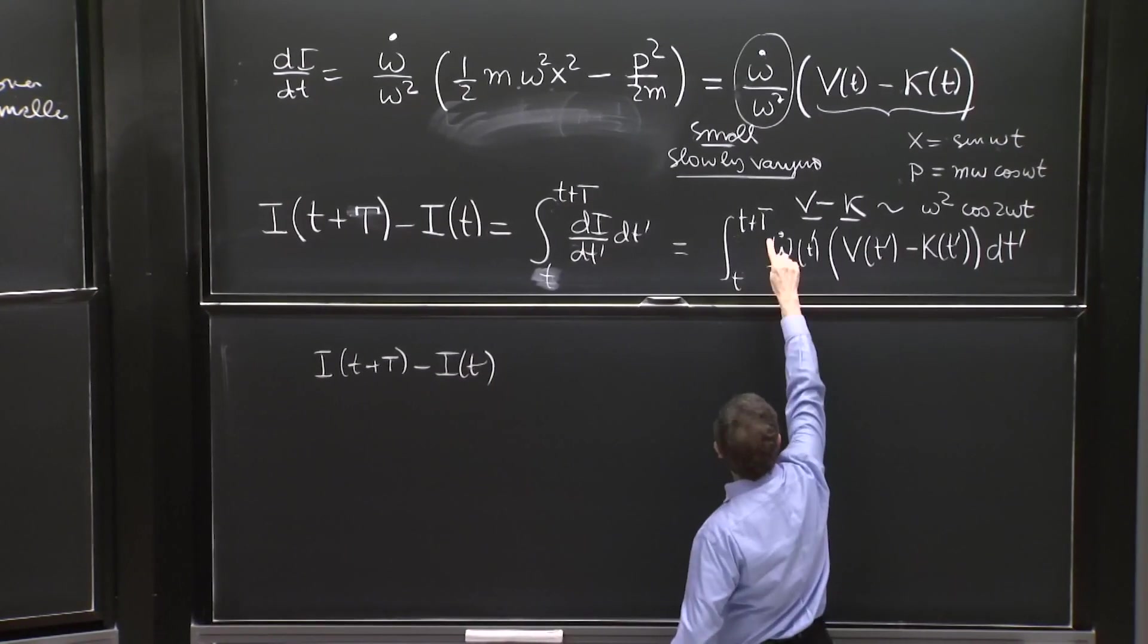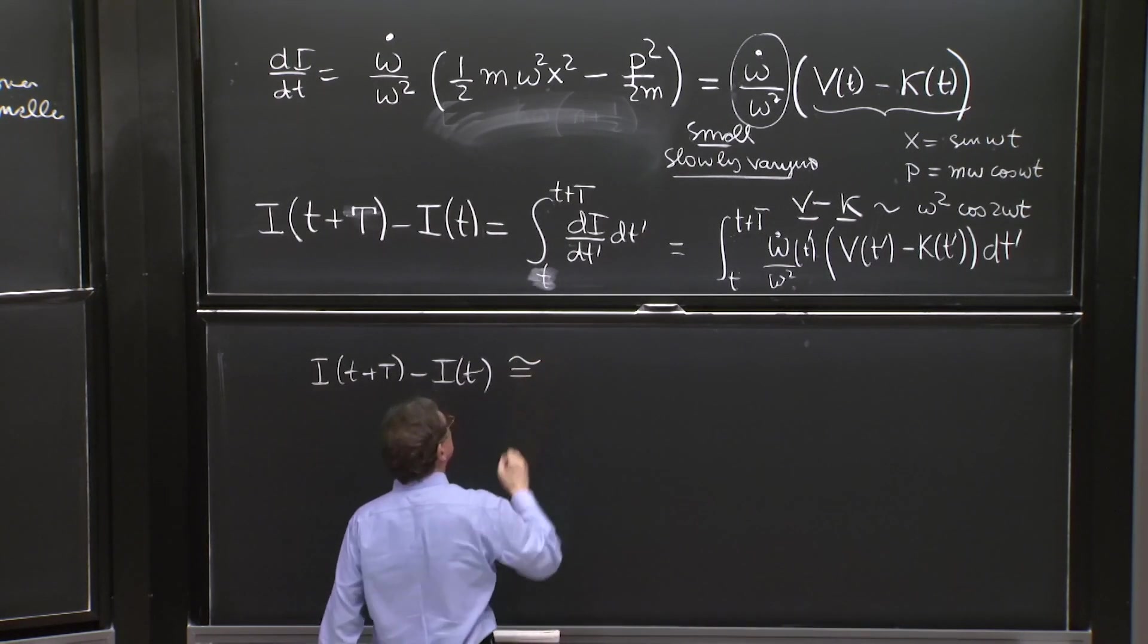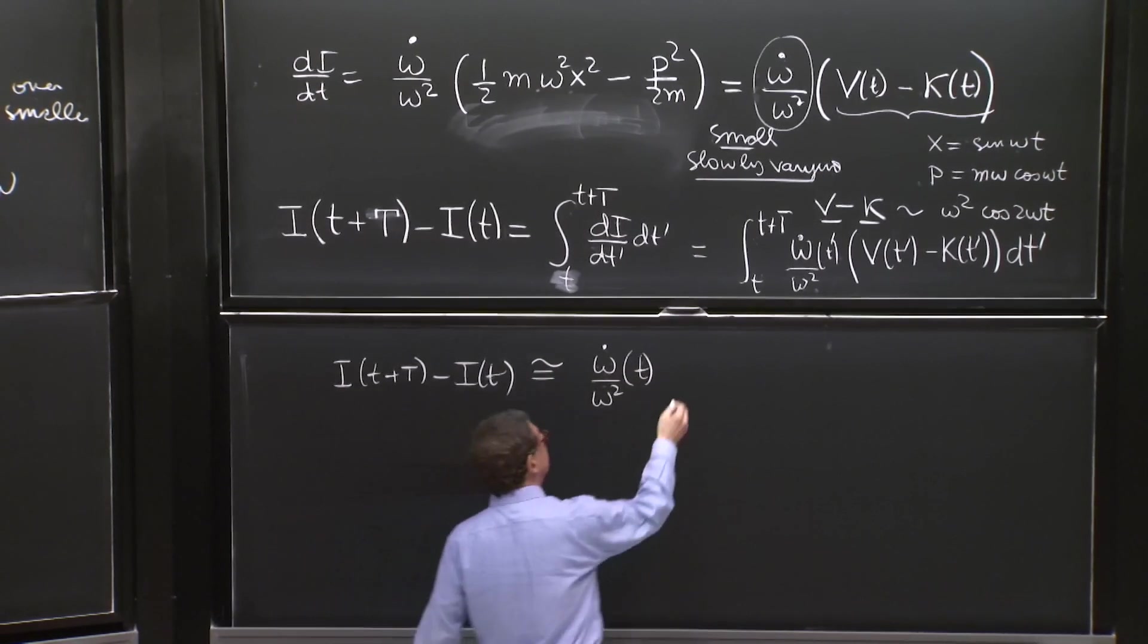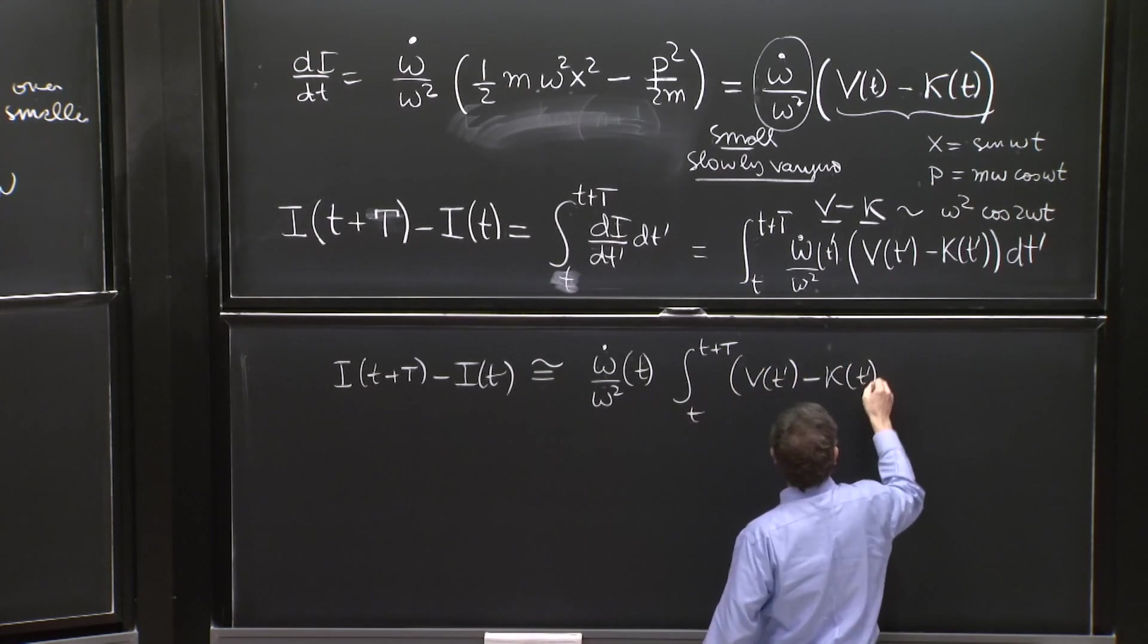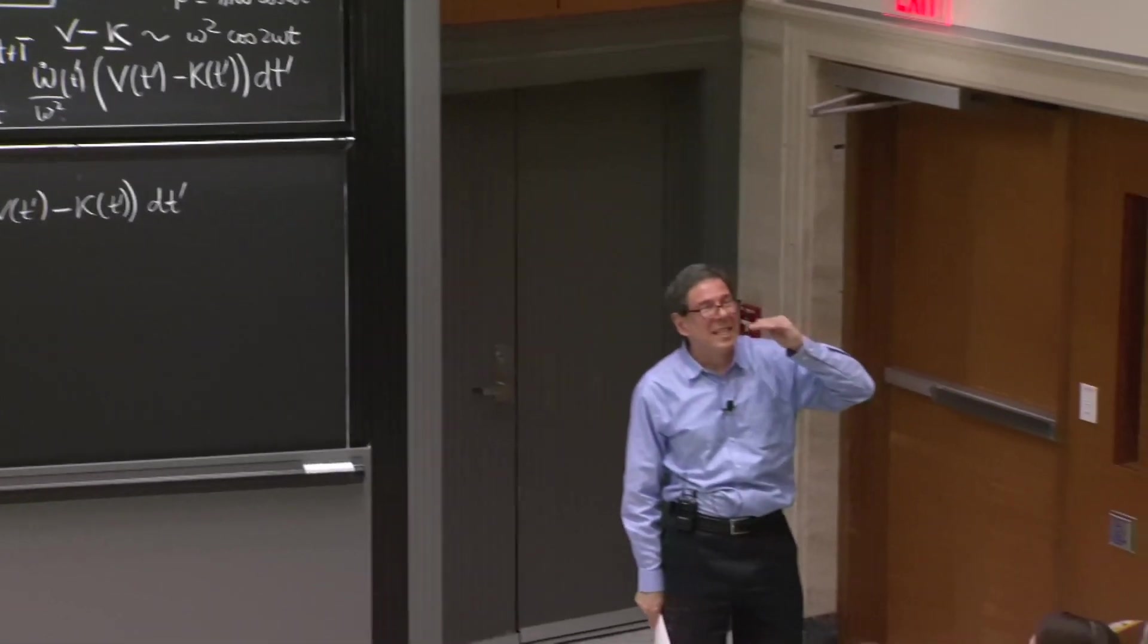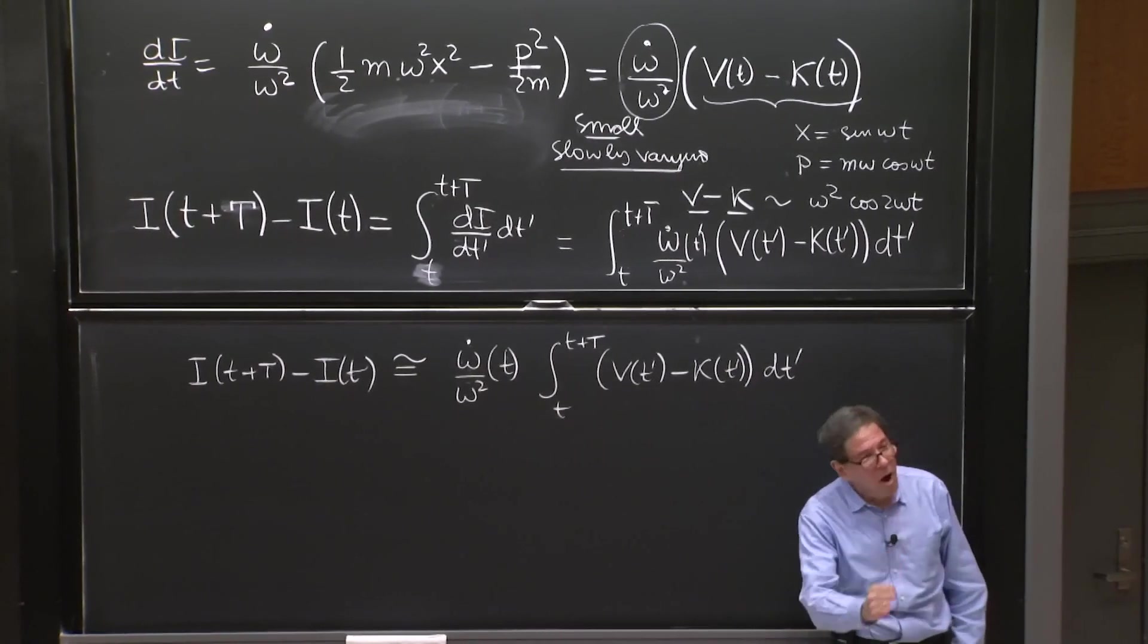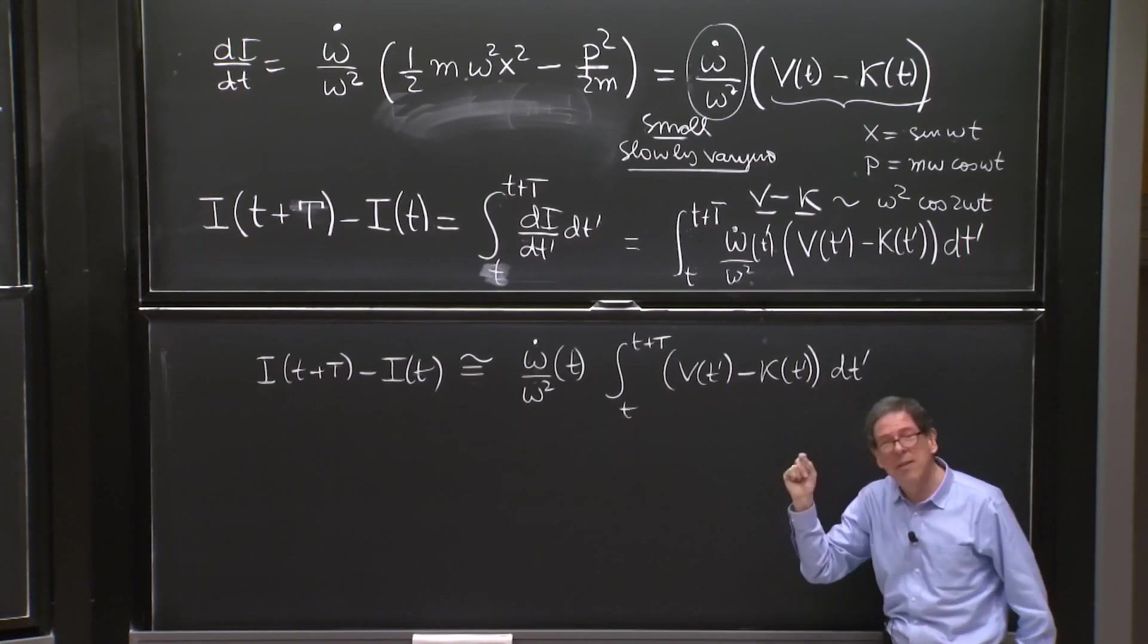Let's see that. You have the derivative of I, so you can calculate the change in I by integrating the derivative of I over any period. And we've done that. And we've asked, how much does this thing change over a period? Then we have that I of t plus T minus I of t. We have an integral over a period. We said this quantity varies very slowly and very little over a period. So roughly speaking, this is equal to omega dot over omega squared at t. It didn't change much over the integral. And then we have the integral over a period of the potential energy minus the kinetic energy.